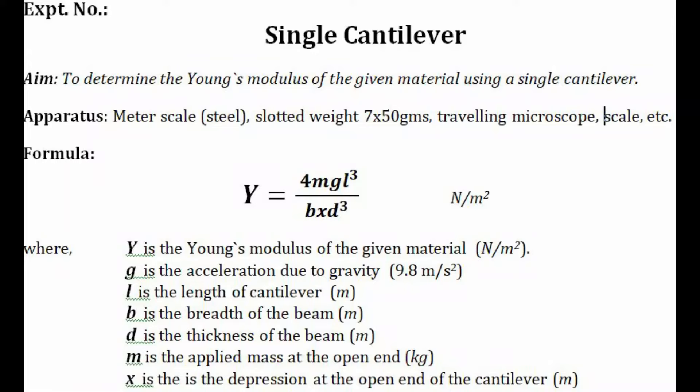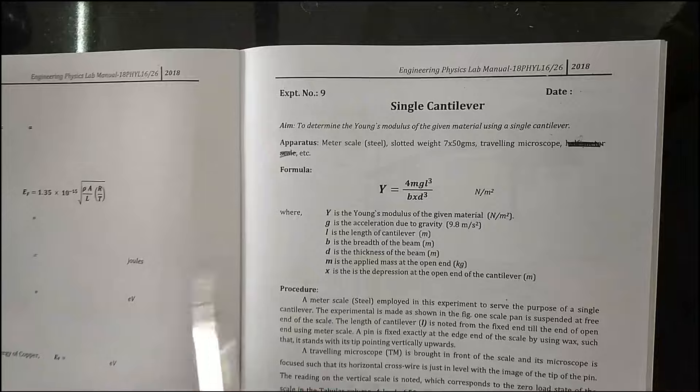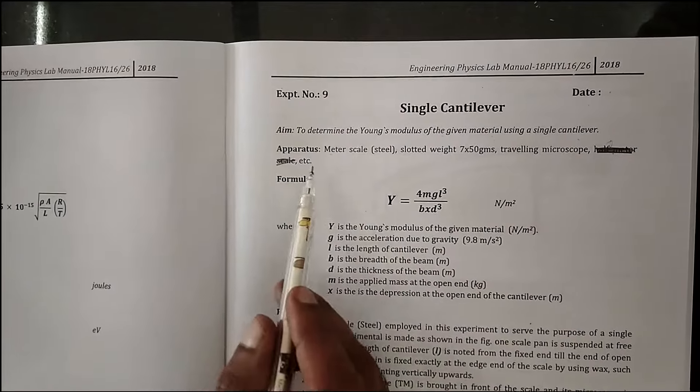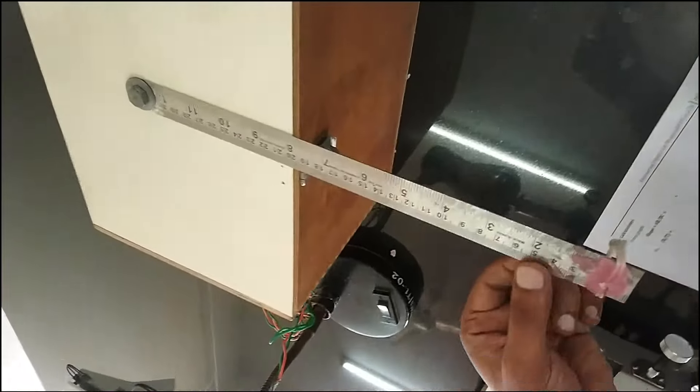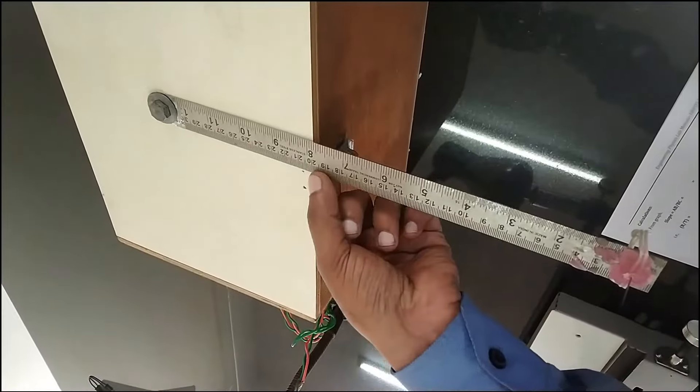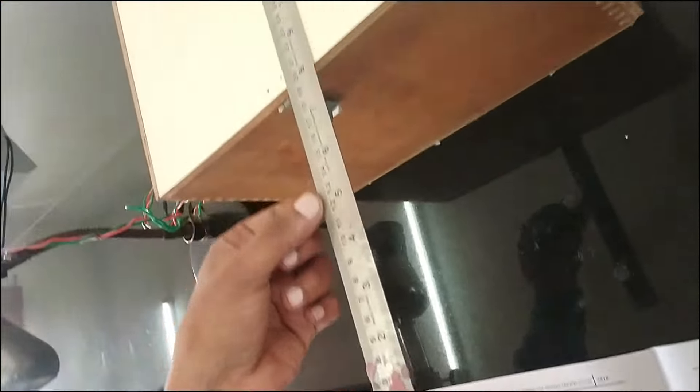In this experiment, we will give information regarding how to perform a single cantilever experiment. The aim of the experiment is to determine the Young's modulus of the given material using a single cantilever. The apparatus required for this experiment includes a meter scale, which is one of the materials, and for this material we have to find the Young's modulus.